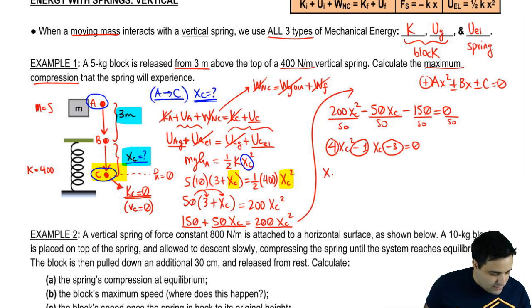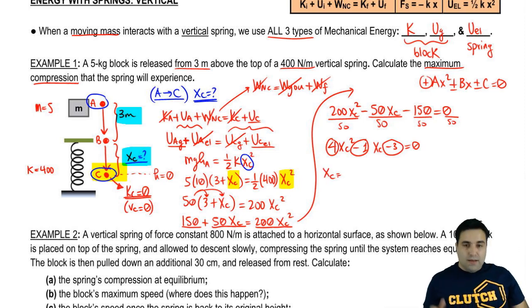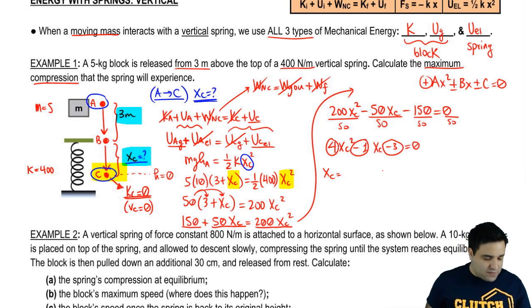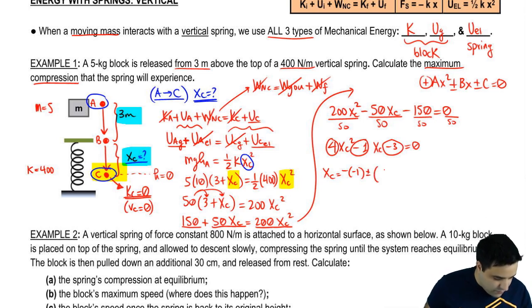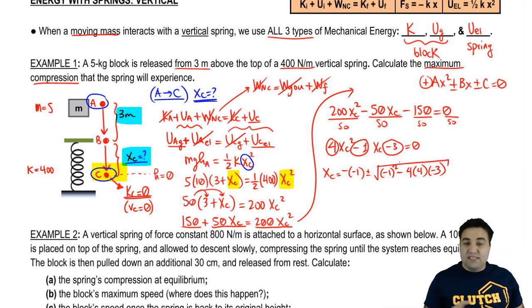xc equals minus b plus or minus the square root of b squared minus 4ac divided by 2a. I'm not going to write the whole thing because I'm running out of space, but obviously you have to know that. So minus b, b is negative 1, all of that, plus or minus the square root of b squared minus 4ac.